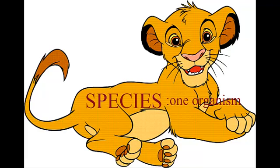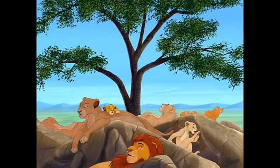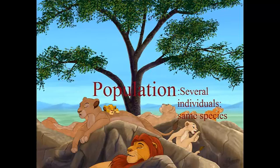Let's say that Simba is hanging out with some of his other lion friends in the shade. This would be an example of a population — there's only one type of species, but there are multiple organisms living together.